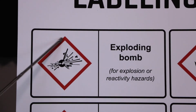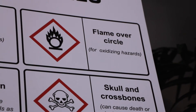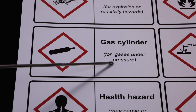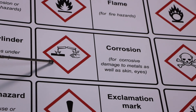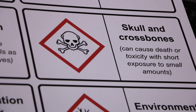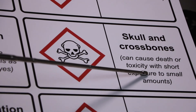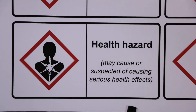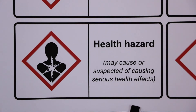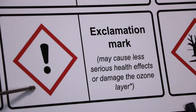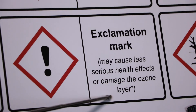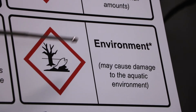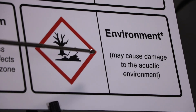Starting off with exploding bomb for explosions or reactivity hazards. Flame for fire hazards. Flame over circle for oxidizing hazards. Gas cylinder for gases under pressure. Corrosion for corrosive damage to metals as well as skin and eyes. Skull and crossbones, which causes death as well as toxicity with short exposure. Health hazards, which may cause suspected serious health effects. Exclamation mark, which may cause serious health effects or damage to the ozone layer. And last but not least, the environment, which is an optional pictogram that may cause damage to the aquatic environment.